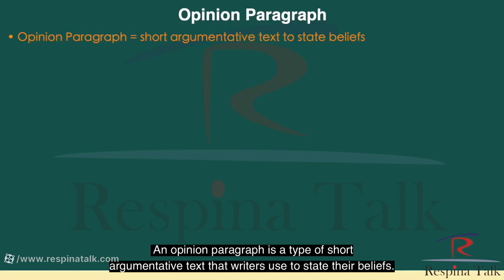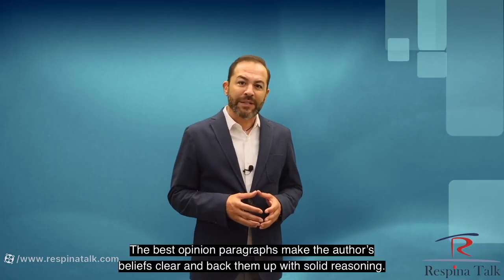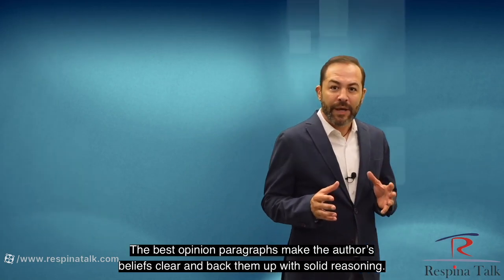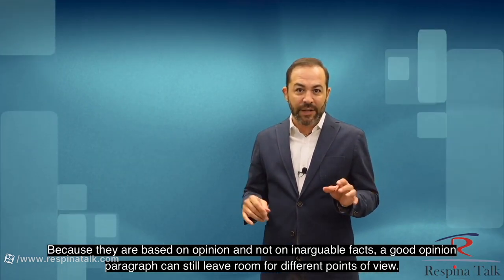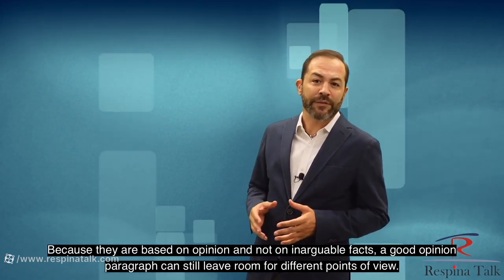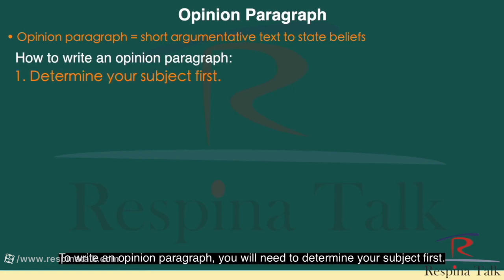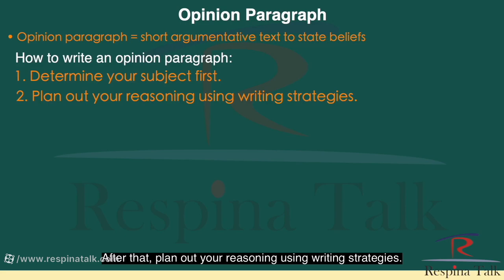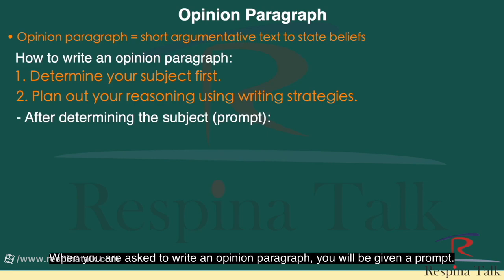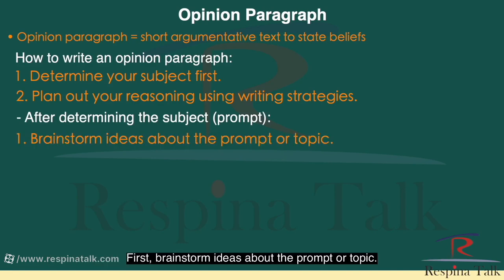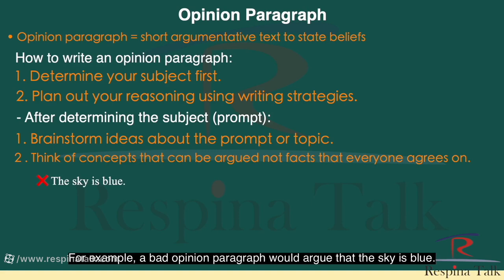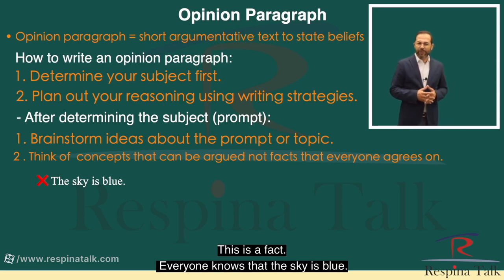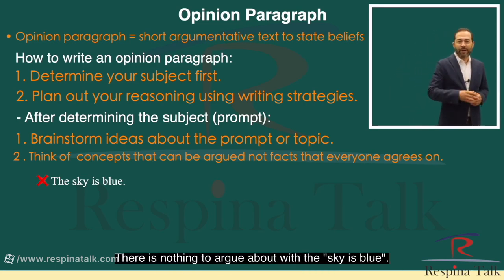An opinion paragraph is a type of short argumentative text that writers use to state their beliefs. The best opinion paragraphs make the author's beliefs clear and back them up with solid reasoning. Because they are based on opinion and not on inarguable facts, a good opinion paragraph can still leave room for different points of view. To write an opinion paragraph, you will need to determine your subject first. After that, plan out your reasoning using writing strategies. When you're asked to write an opinion paragraph, you will be given a prompt. First, brainstorm ideas about the prompt or topic. Make sure these are concepts that can be argued, not facts that everyone agrees on. For example, a bad opinion paragraph would argue that the sky is blue — this is a fact that everyone knows and there is nothing to argue about.